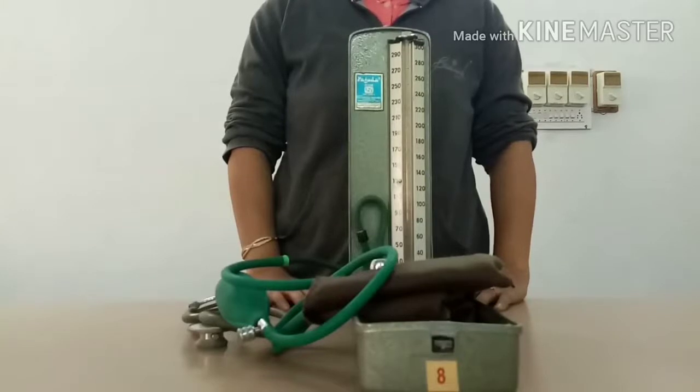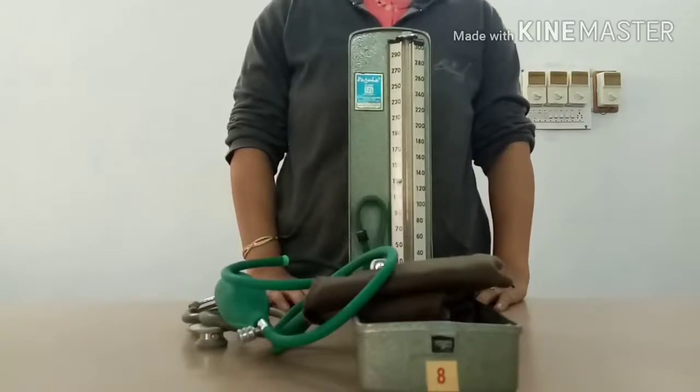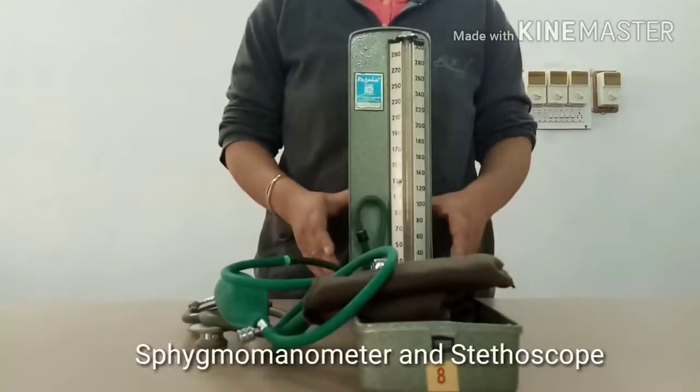Maximum and minimum pressures in the arterial system are known as systolic and diastolic pressures respectively. The instrument commonly used for the measurement of blood pressure is the sphygmomanometer.